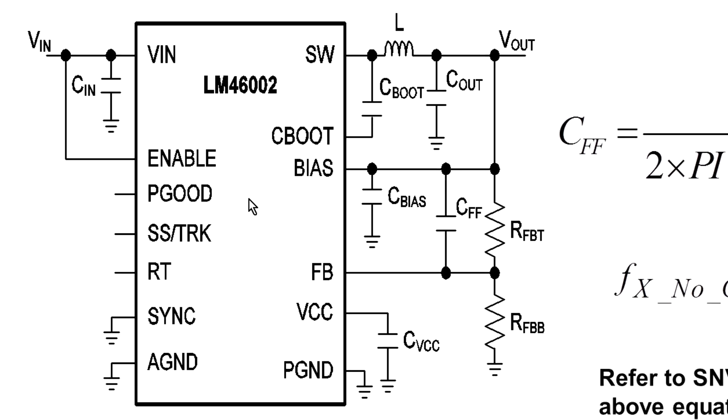The LM46002 can work with a variety of output capacitor chemistries but if you have only ceramic capacitors at the output and if you have a very stringent requirement on the output voltage deviation during a fast load transient, then it's helpful to add a feed-forward capacitor in parallel with the upper feedback resistor.